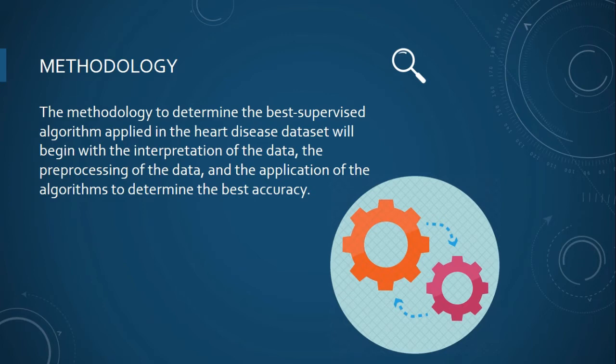Which one is the methodology that we use? The methodology to determine the best supervised algorithm applied in the heart disease dataset will begin with the interpretation of the data, the processing of the data, and the application of the algorithm to determine the best accuracy. In methodology we use the datasets. The datasets used for this research will be the heart disease, which was found in the Kaggle repository. This database contains 76 attributes.